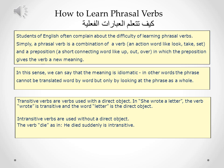Transitive verbs are verbs used with a direct object. For example, in 'she wrote a letter,' the verb 'wrote' is a transitive verb and the word 'letter' is the direct object. Intransitive verbs are used without a direct object. The verb 'die,' as in 'he died suddenly,' is intransitive. We don't use a direct object in this example, because the verb 'die' is intransitive — it doesn't take an object.